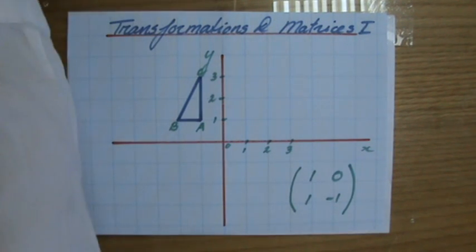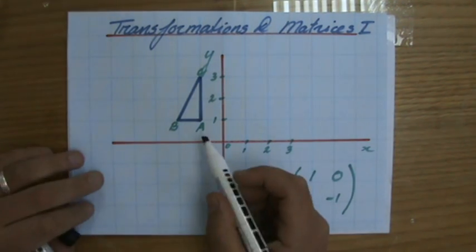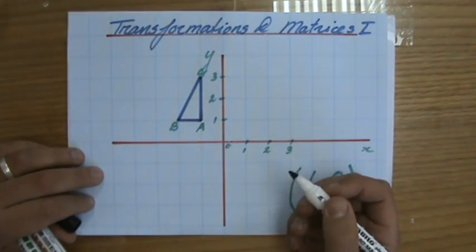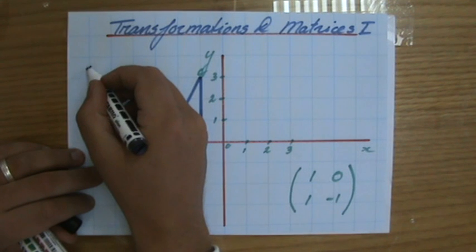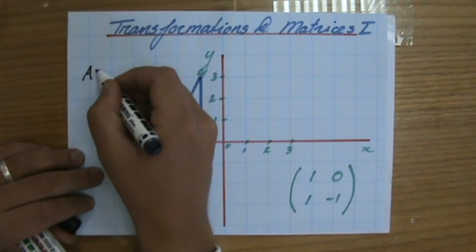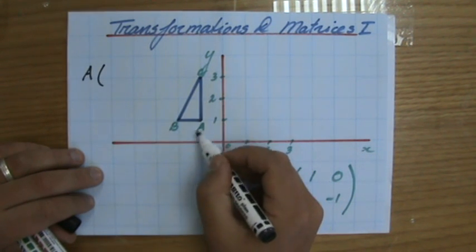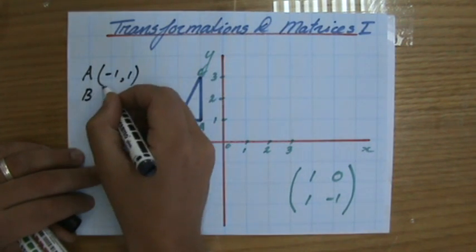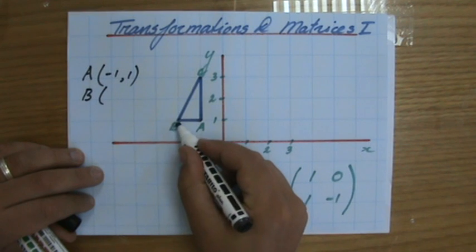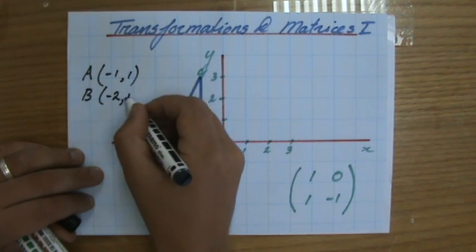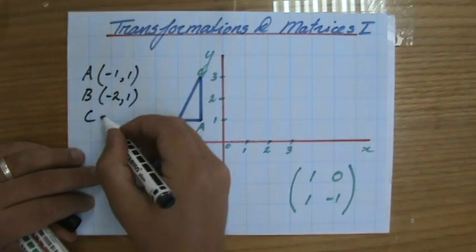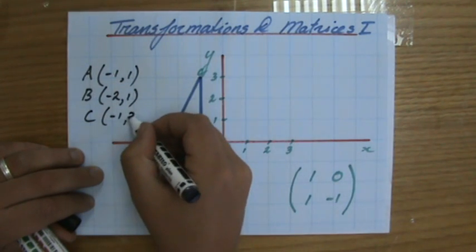Now it's quite straightforward if you know what to do. We're going to write down the coordinates of my three vertices in this case, because it's a triangle. So I'm going to write down coordinate A, which is minus 1, 1. I'll do the same for B, which is minus 2, 1. And the coordinate of vertex C is minus 1, 3.